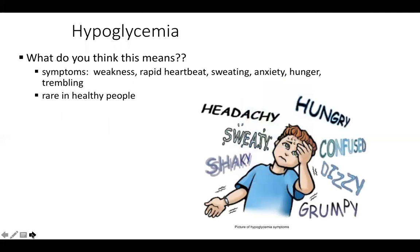Hypoglycemia means low blood sugar. Symptoms include weakness, rapid heartbeat, sweating, anxiety, hunger, and trembling. These symptoms usually occur at a blood sugar below 70, though some people may not be symptomatic until lower. This can occur if a diabetic has not eaten and has taken too much medication, performed excessive exercise, or been sick. Hypoglycemia can be life-threatening in diabetics, but for non-diabetics it rarely becomes life-threatening.